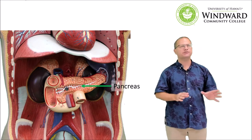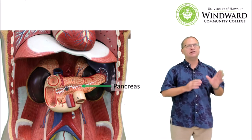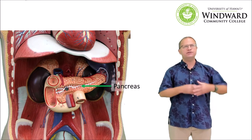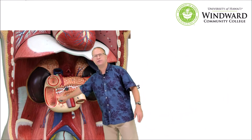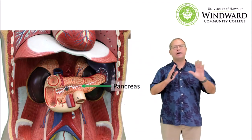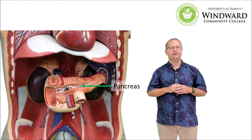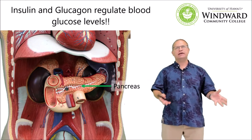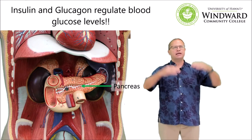Now let's take a look at the pancreas, a very important endocrine and exocrine organ. Exocrine glands secrete products through ducts — the pancreas has ducts that deliver enzymes into the duodenum, which is part of the GI tract. Endocrine glands, on the other hand, lack ducts, so hormones simply diffuse through body fluids and hitch a ride on the bloodstream. The two hormones produced by the pancreas are insulin and glucagon. Insulin stimulates the uptake of glucose into cells, lowering blood sugar, whereas glucagon frees up blood sugar from the liver and muscles to keep blood sugar levels from going too low.